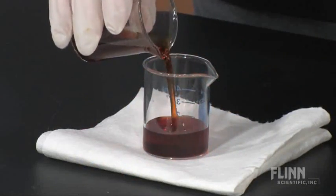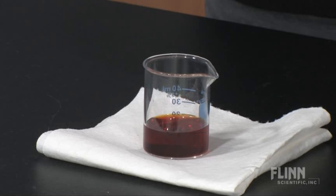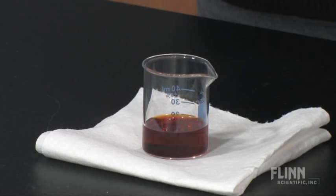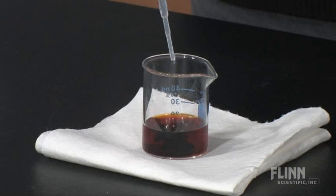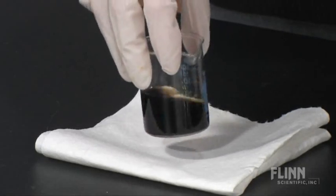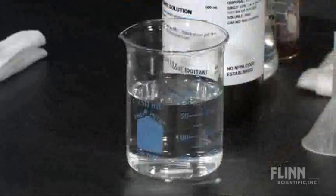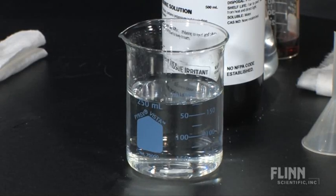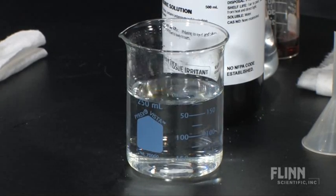To demonstrate dialysis tubing at work, we can conduct a simple experiment using the characteristic reaction of starch and iodine. When starch and iodine react with each other, they form a characteristic blue-black color. We start by filling a beaker with distilled water and add a small amount of iodine.